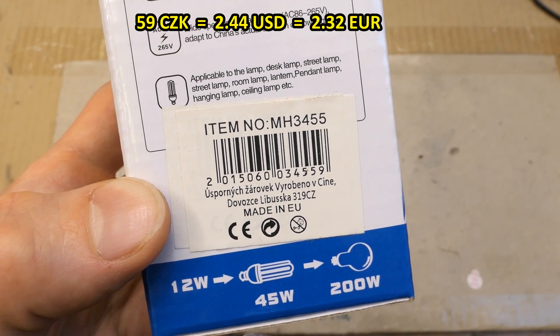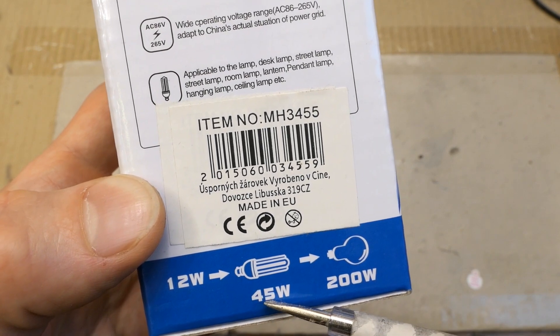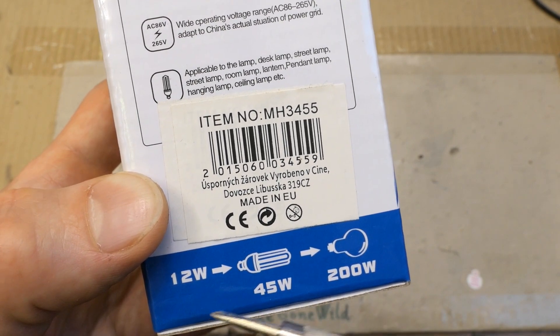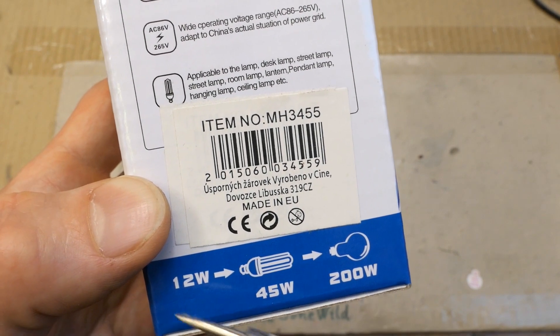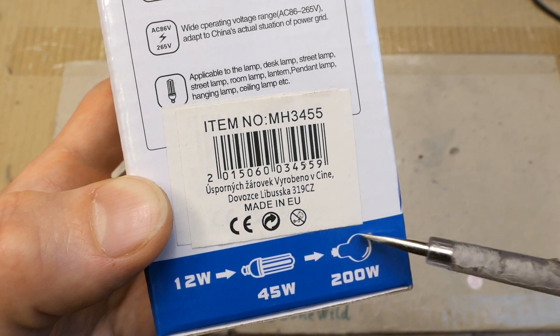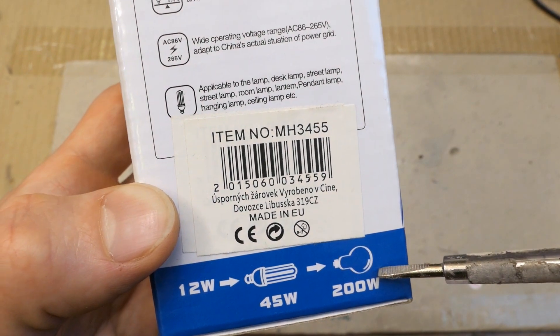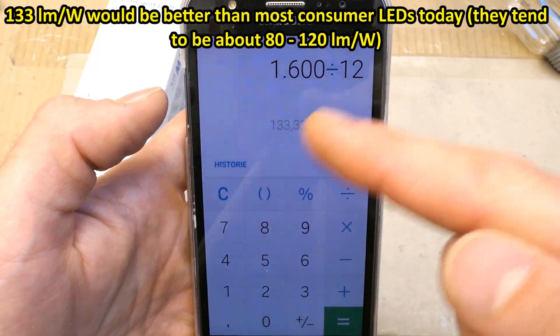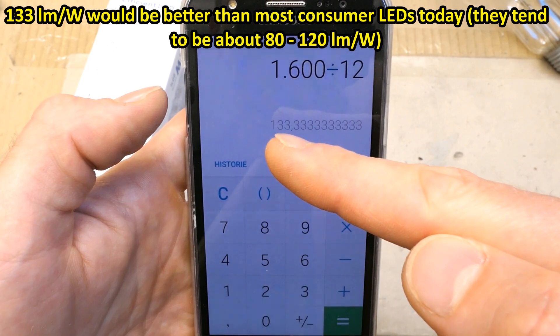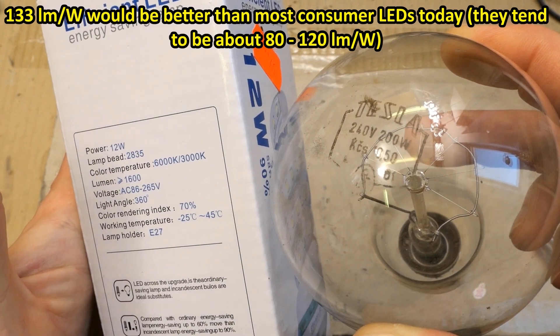And it says 12 watts replaces 45 watts compact fluorescent. Well this would mean that it's 4 times more efficient than CFLs. LEDs are maybe 50% more efficient, maybe twice as efficient as CFLs but definitely not 4 times. And it also replaces a 200 watt tungsten lamp. I'm also not sure about it. A 200 watt tungsten lamp would be about 3000 lumens. And here it says 1600.